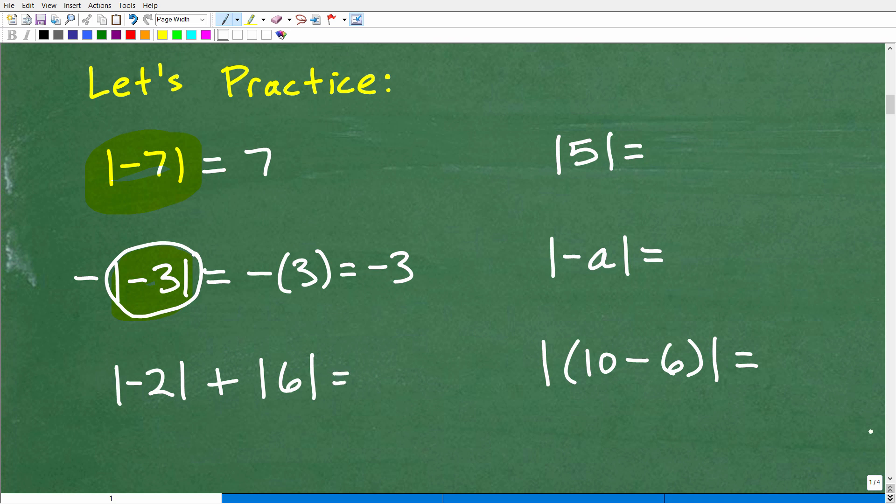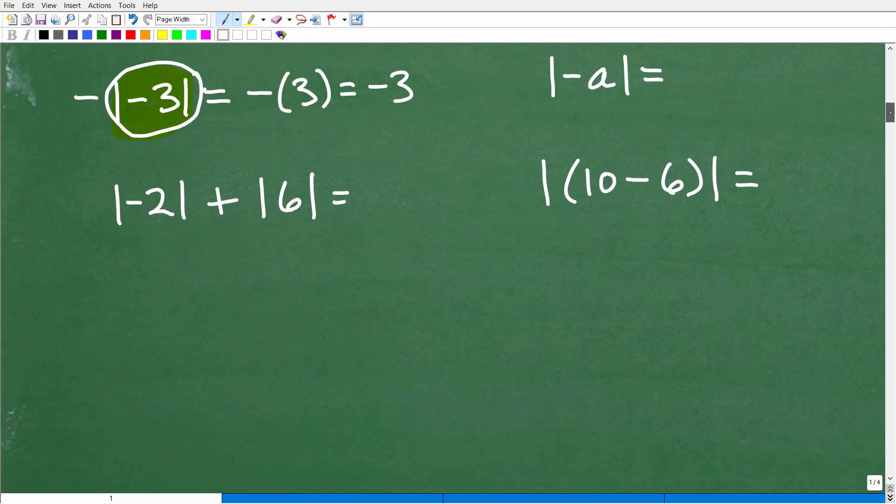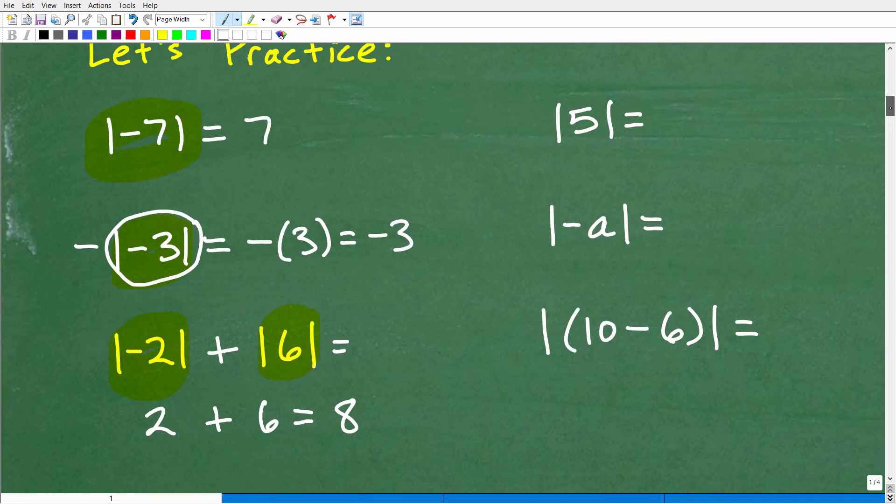Let's go ahead and take a look at this next problem. Give myself some room. All right, so the absolute value of negative two is, of course, what? That's going to be positive two plus the absolute value of a positive six is six. So that's going to be two plus six, which, of course, is eight. So you can see this is not difficult at all.